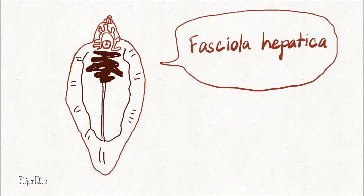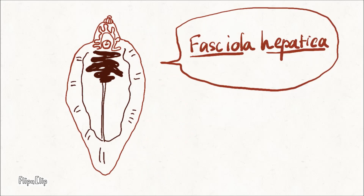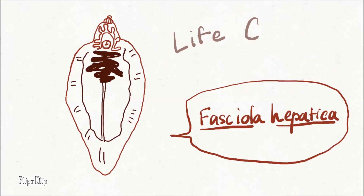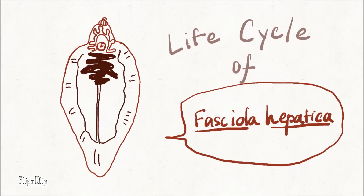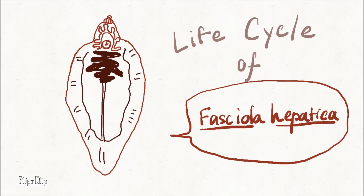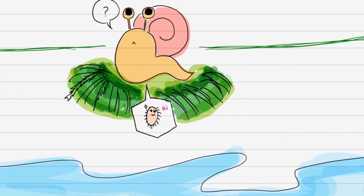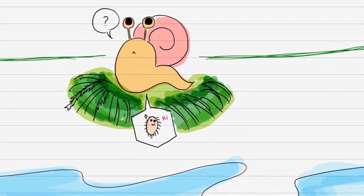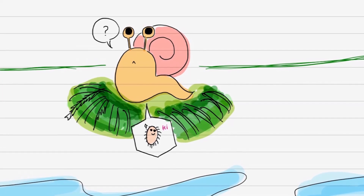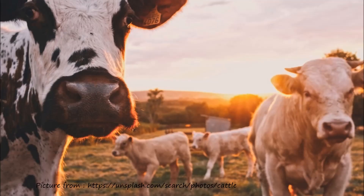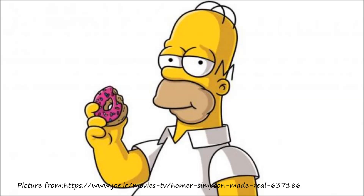Fasciola hepatica, or common liver fluke, is a parasitic trematode which infects two or more alternative hosts. The life cycle of Fasciola hepatica goes through the intermediate host, which is a snail, and then completes its life cycle as an adult worm in the definitive hosts, which are sheep, cattle, and also human.